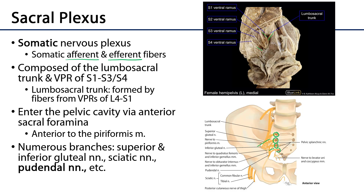There are many major branches of the sacral plexus. The superior and inferior gluteal nerves are branches we will discuss in the context of the hip. The sciatic nerve, comprised of the tibial nerve and the common fibular nerve, we'll describe in the context of the lower limb in MSK, and specifically the pudendal nerve.